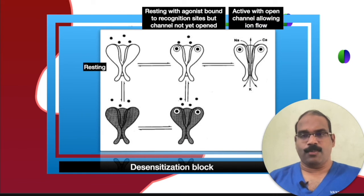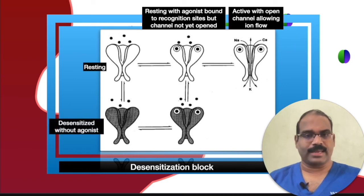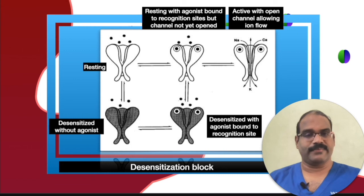Active state with open channel allowing ion flow, and desensitized state without agonists, and desensitized state with agonists bound to the recognition site are seen in the picture. Agonists do promote the transition to a desensitized state or trap receptors in that state. As desensitized receptors have a high affinity for them, normally acetylcholine is hydrolyzed so rapidly that it has no potential for causing desensitization.